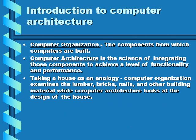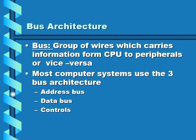Computer organization refers to how computers are built by integrating many components to achieve overall performance — the processor, RAM, hard disk drive, and buses that connect peripherals. Using a house as an analogy: computer organization examines the lumber, bricks, and nails, while computer architecture looks at the design of the house.